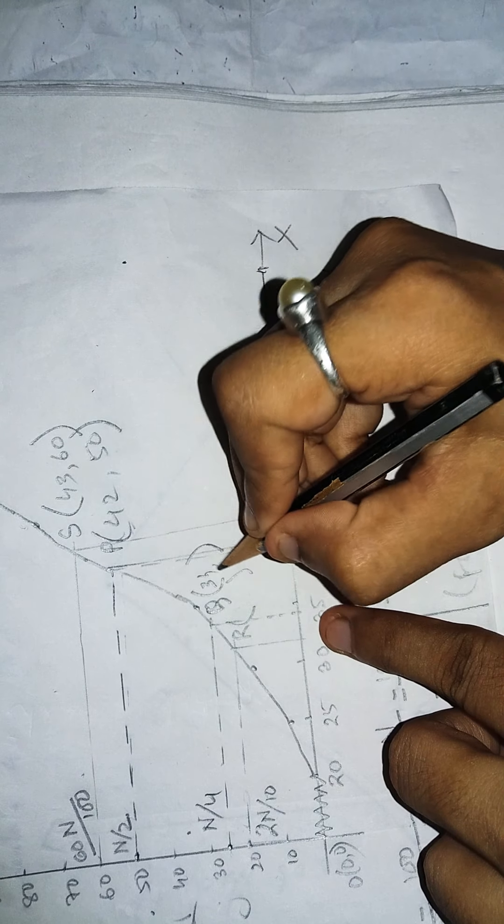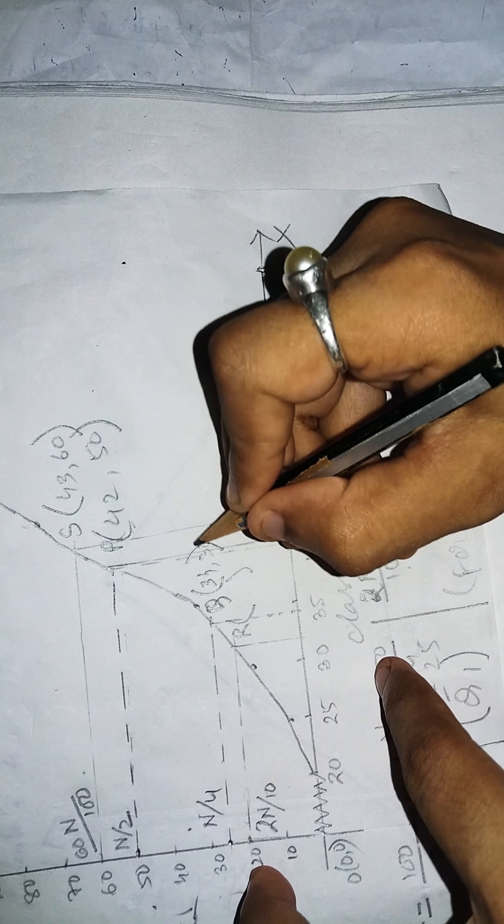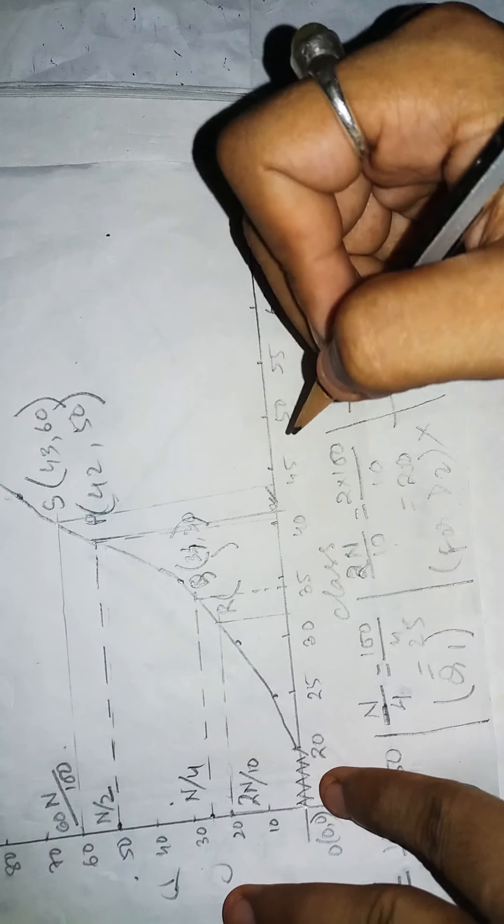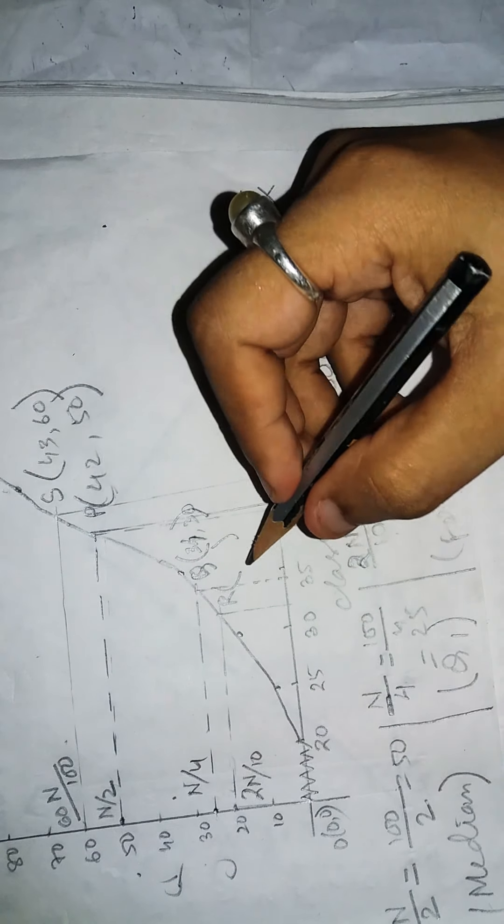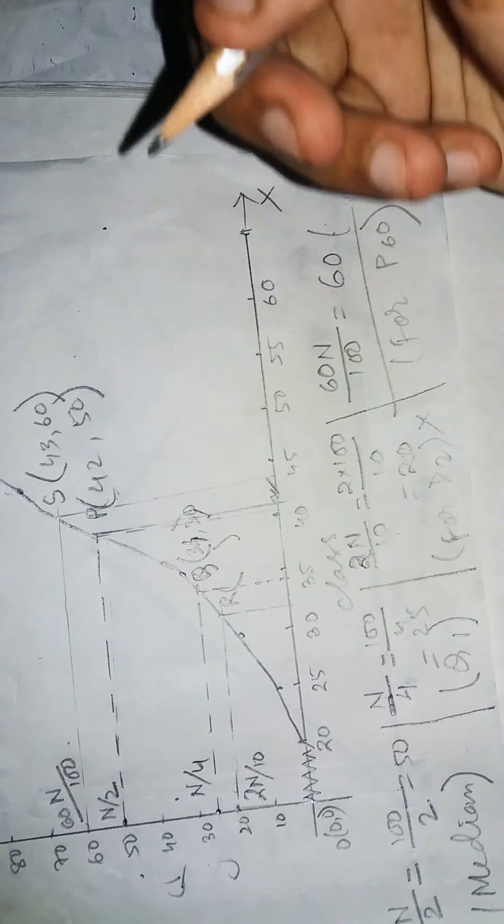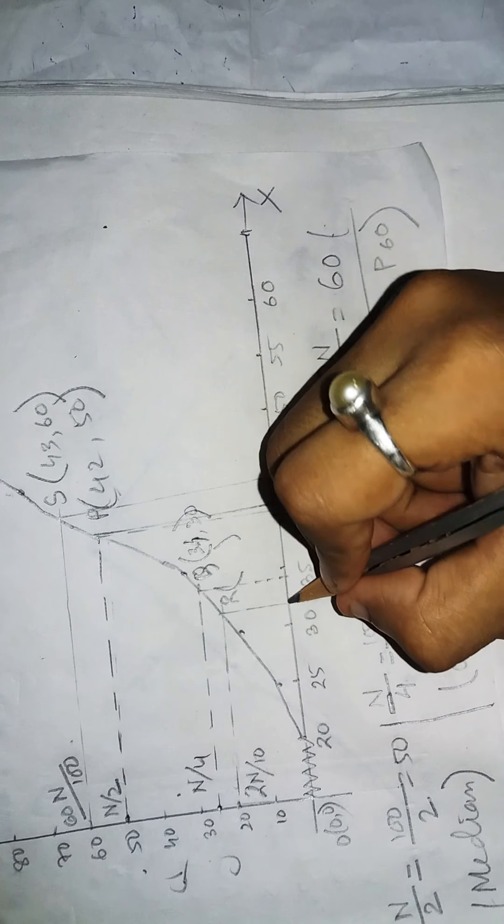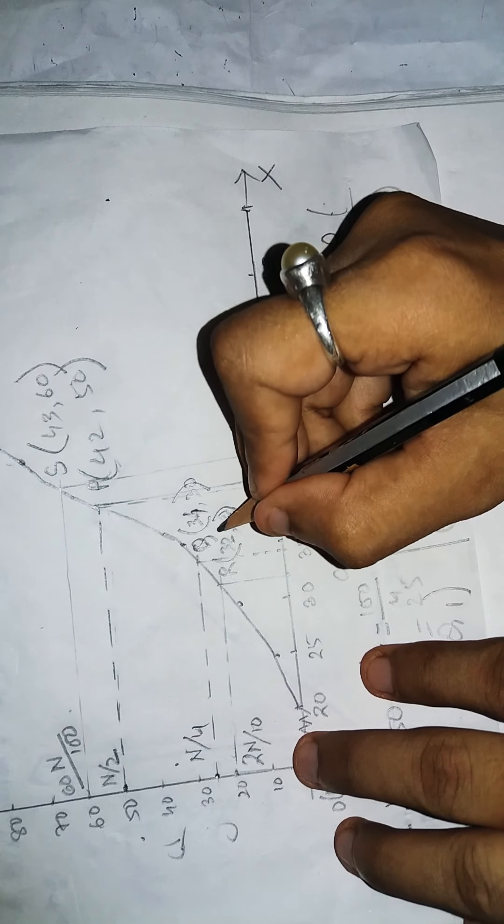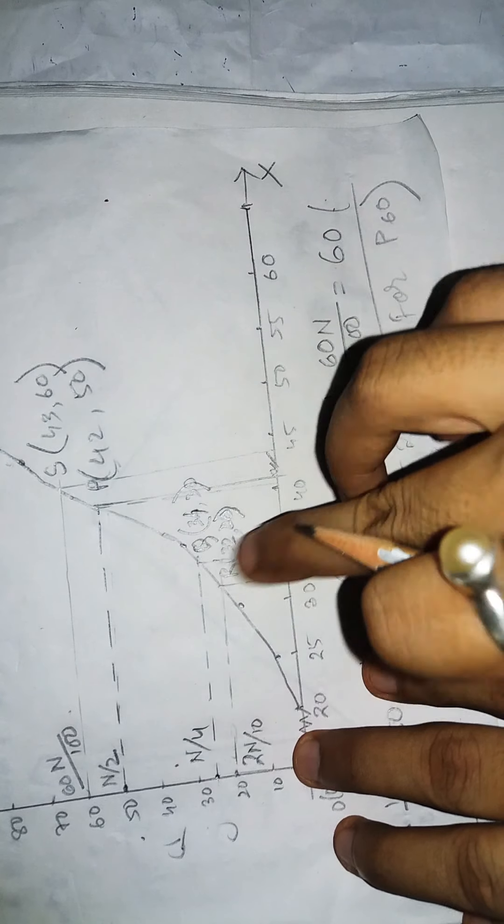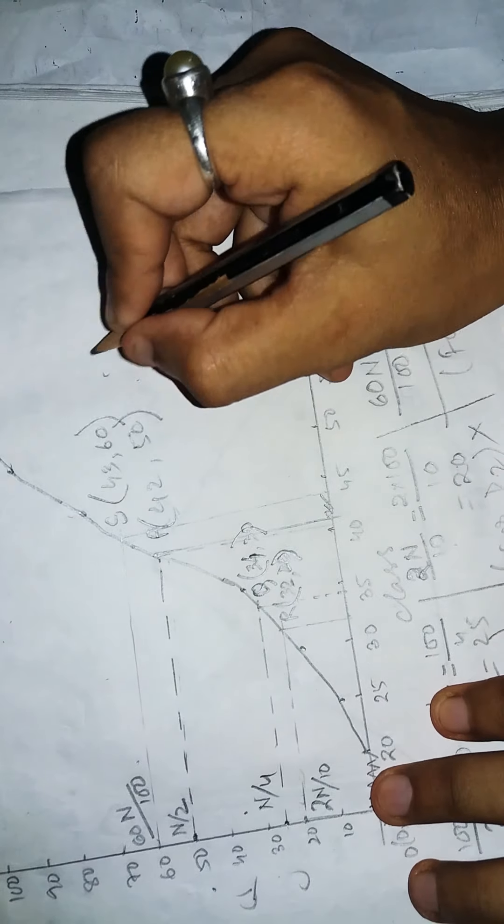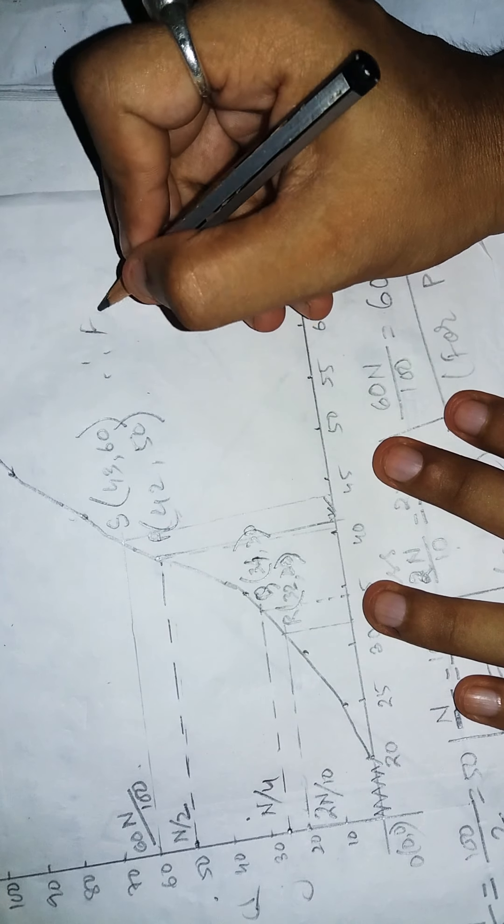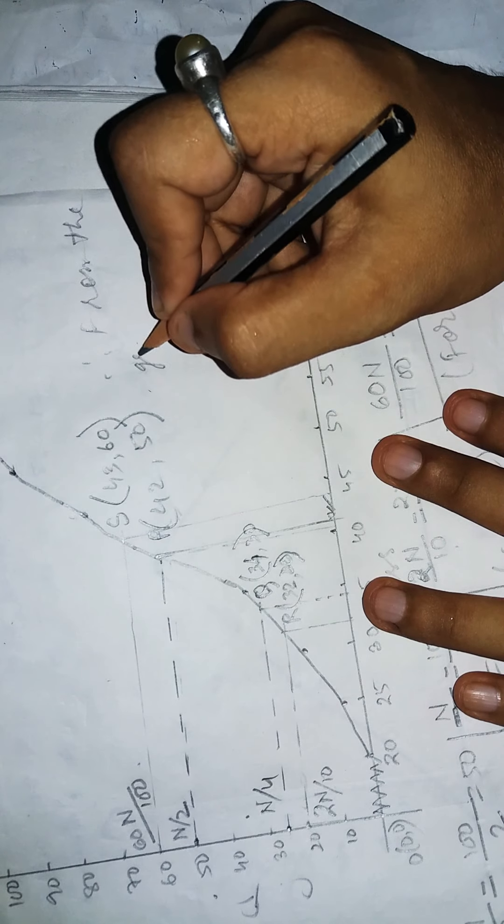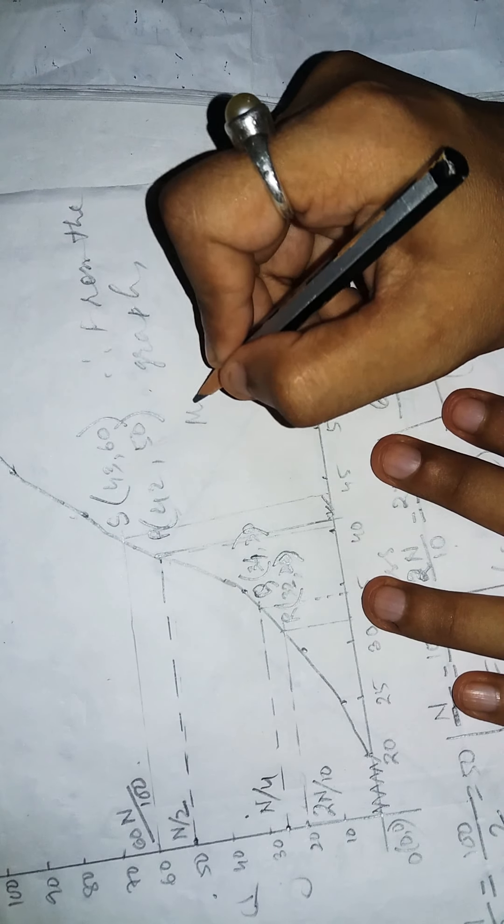The ordinate is 20n by 100, and the abscissa is 32. From the graph, we can determine these values.